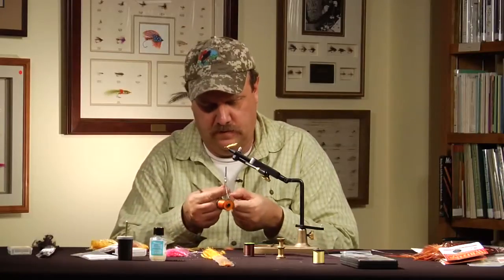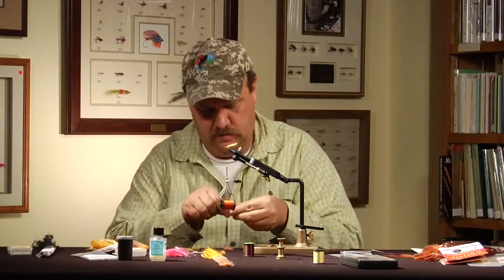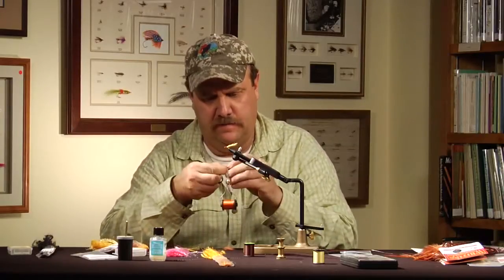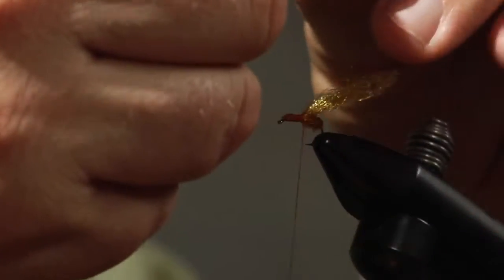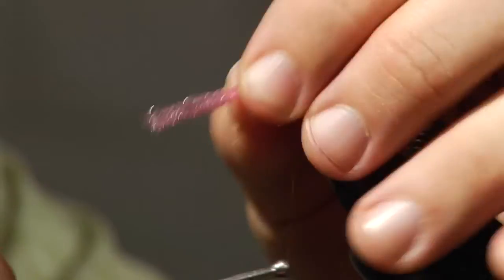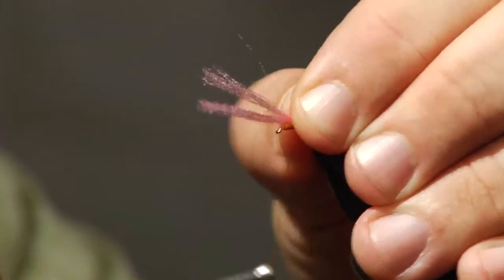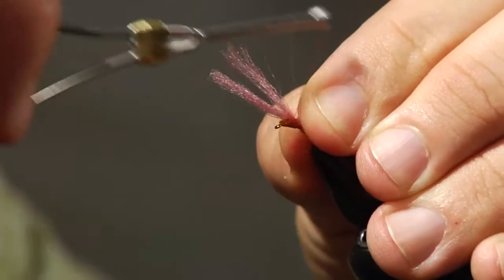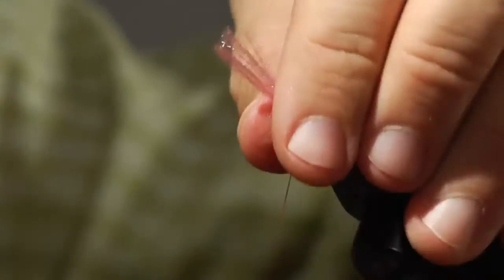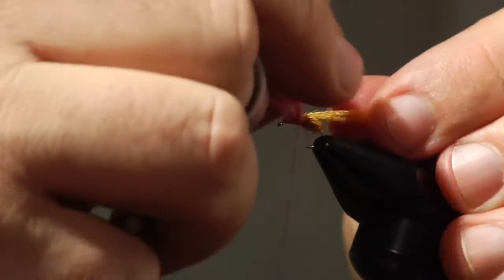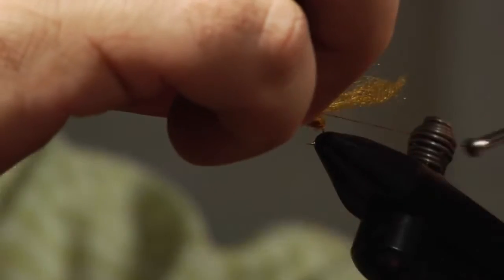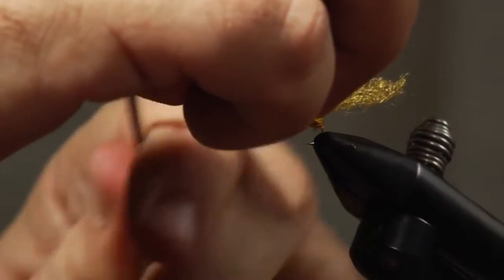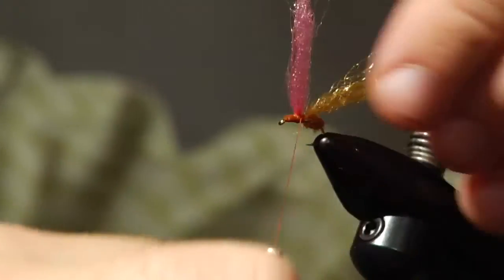Now I'm going to tie in a post. I'm going to double that over and I'm going to come right to about mid shank and tie that in with at least four wraps. And I'm going to start building up that post.